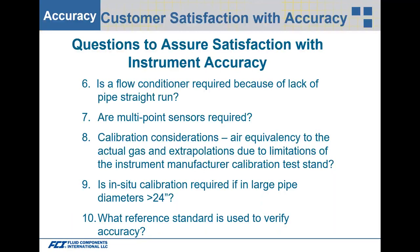Is in-situ calibration required for large pipe diameters, say 24 inches or larger? You can use a single point and perform in-situ field calibration: install the flow meter, insert an S-style pitot tube, perform a cross-sectional traverse across the pipe to find the average flow, reinsert the flow meter, compare it to the pitot tube measurements, and make a correction factor to match the traverse result.